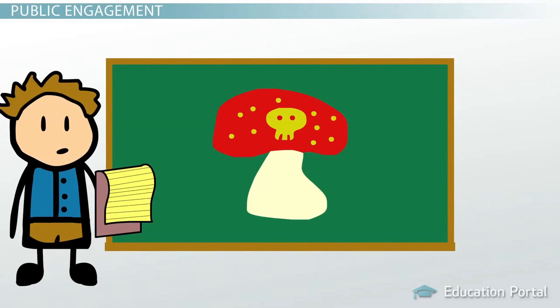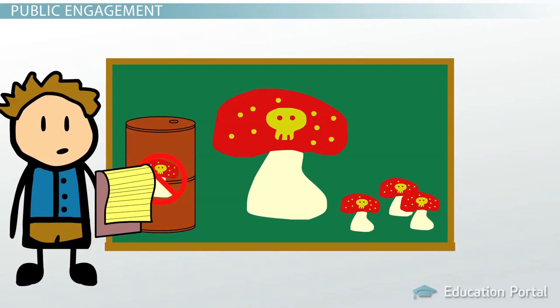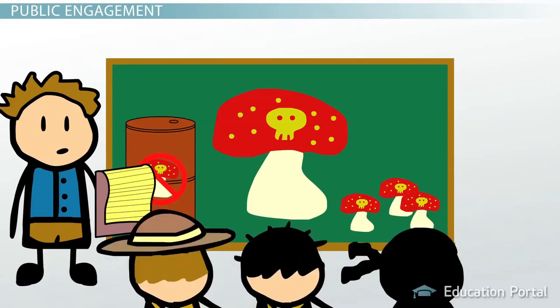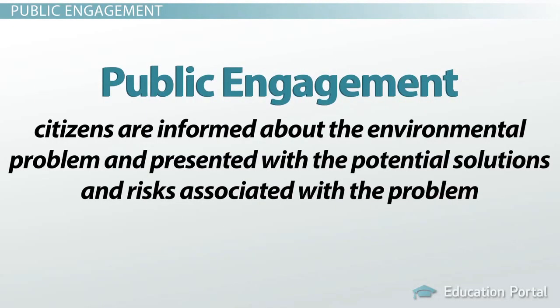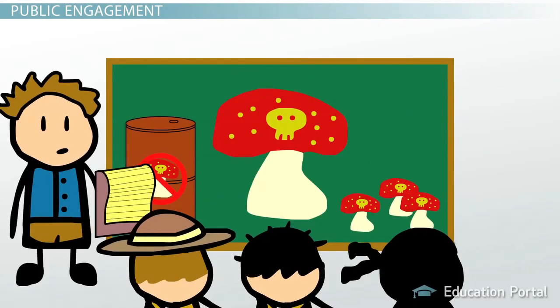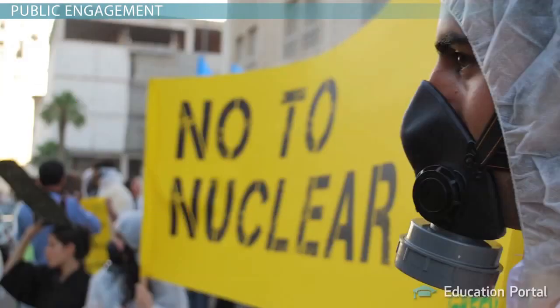After the cause of the environmental problem has been determined and the risks associated with each outcome have been assessed, it is important to get the public involved. The third step in the scientific evaluation of an environmental problem is public engagement. Public engagement is when citizens are informed about the environmental problem and presented with the potential solutions and risks associated with the problem. It is very important because it is the step where more people become informed and can take action. In some cases, this leads to public demonstrations to raise awareness or citizens voicing their opinion on how the issue should be handled to their local politicians and governing agencies.